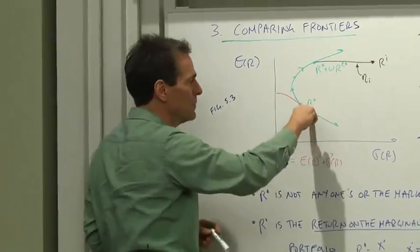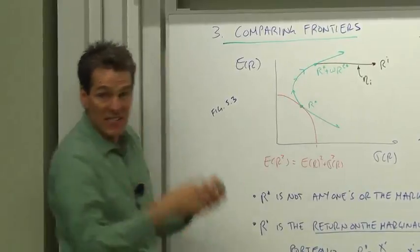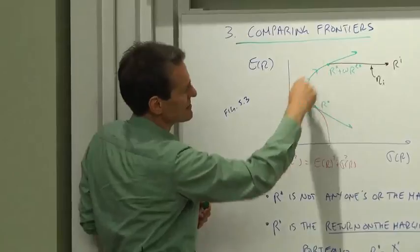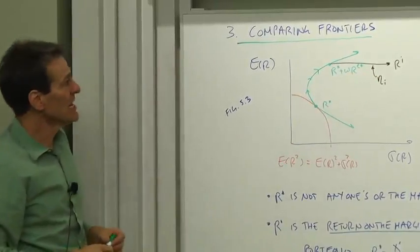Well, we start with any return, we start with r star. R star plus wre star, that sweeps out the mean-variance frontier, so that brings us, for a typical return here, that brings us along the mean-variance frontier.